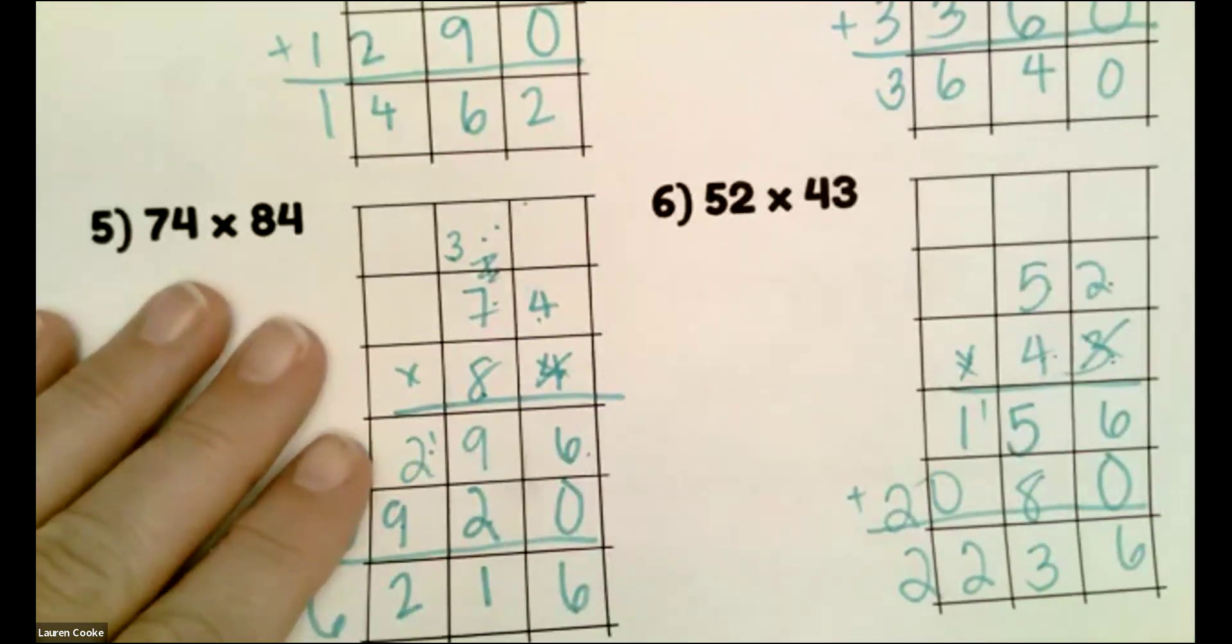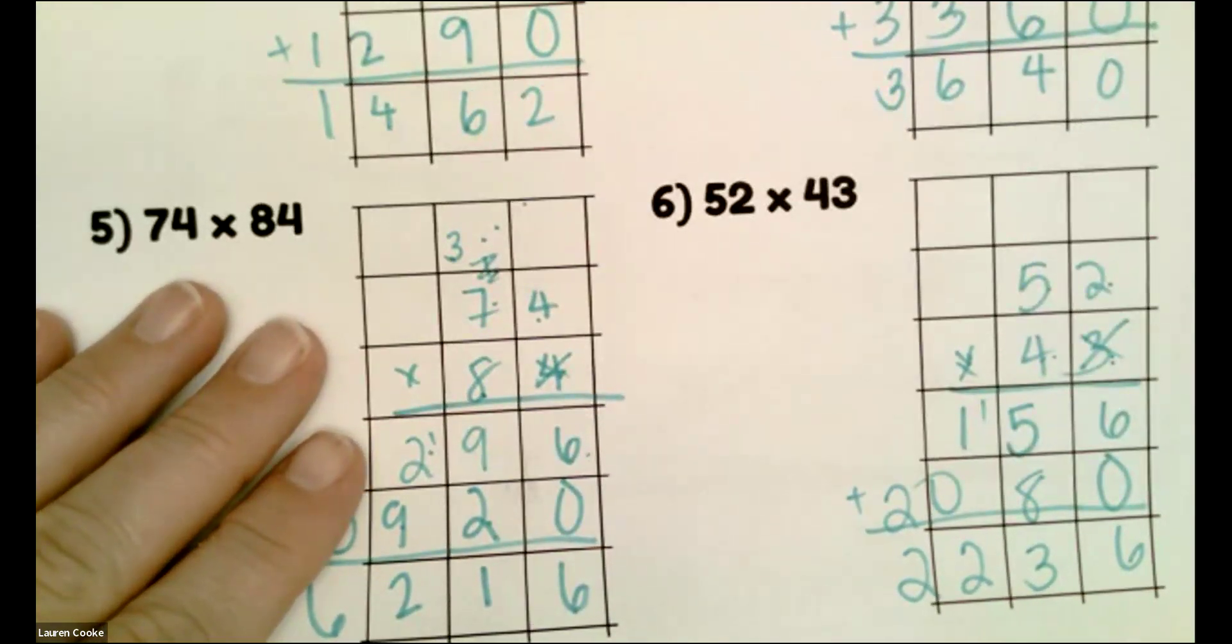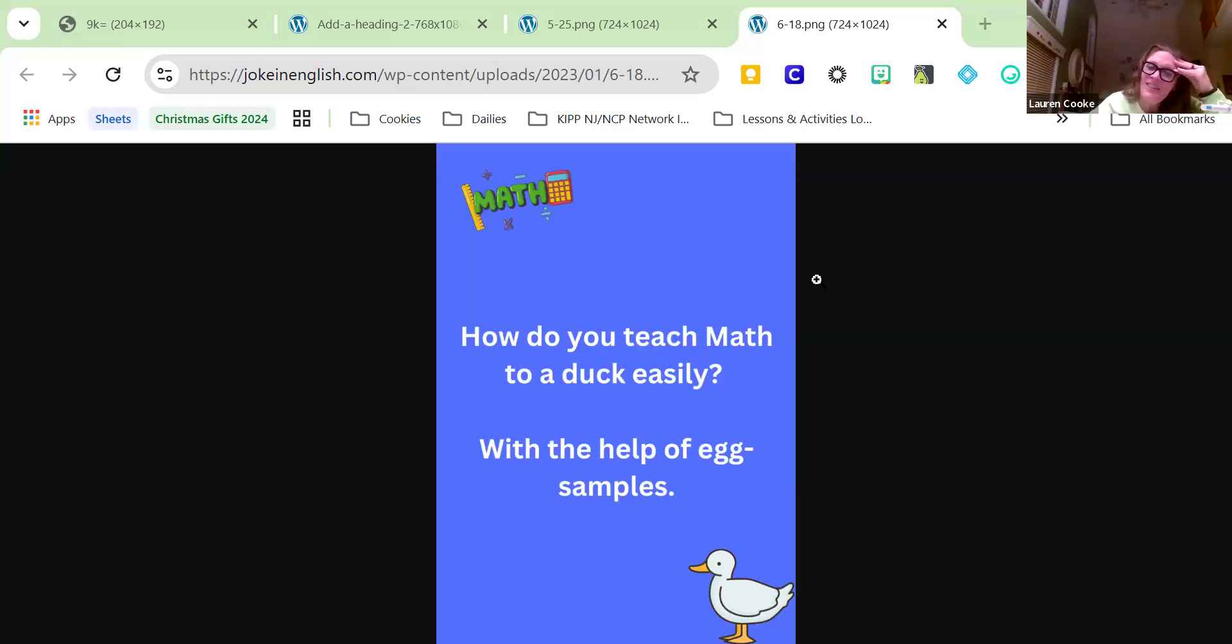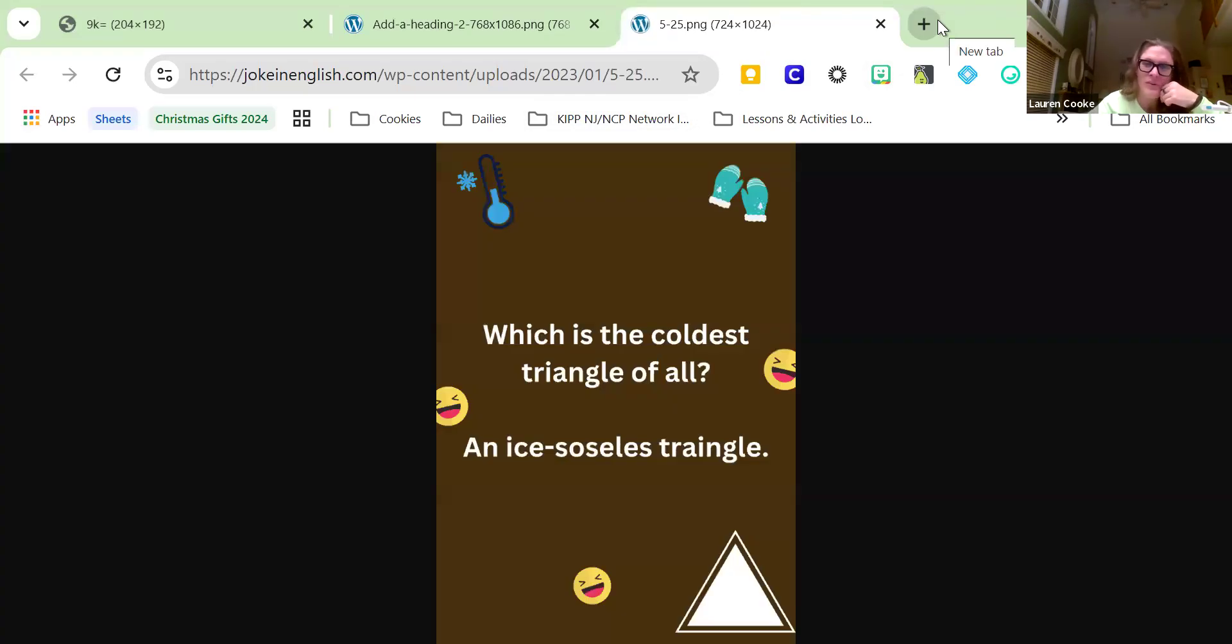So let's get started on some jokes. How do you teach math to a duck easily? With the help of some example. That does make me laugh, actually. Which is the coldest triangle of all, an isosceles triangle. An isosceles triangle has two sides and angles that are the same out of the three in a triangle.